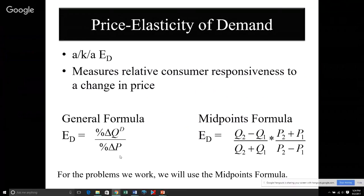There's two formulas we talk about. This is a very general formula, sometimes called the point elasticity formula. We typically are evaluating these things over a segment of the demand curve, so we're going to deal with what's called the midpoints formula. This is not the same as slope at all, so don't confuse it with slope. The midpoints formula is Q2 minus Q1 divided by Q2 plus Q1, multiplied by P2 plus P1 divided by P2 minus P1.